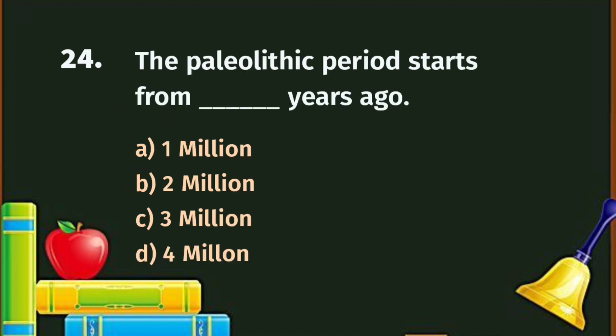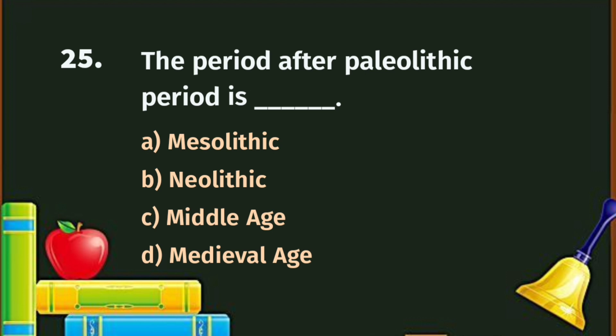Question number 24. The Paleolithic period starts from how many years ago? A. One million, B. Two million, C. Three million, D. Four million. The correct answer is B - Two million years ago.